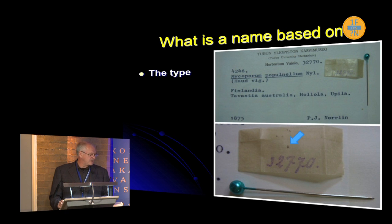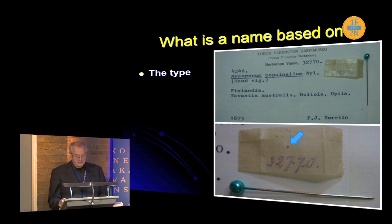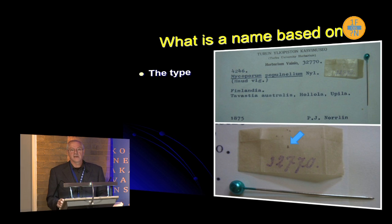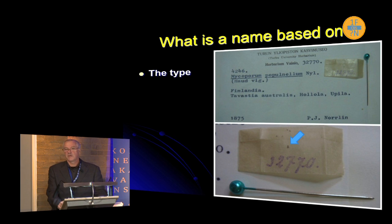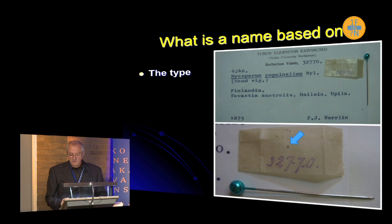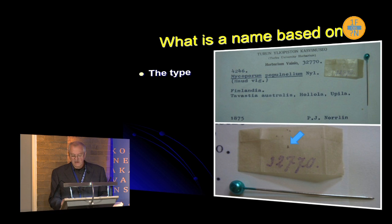Well, of course it's based on the type, and there are many types. Here is an example of a type — a tiny, tiny little piece of something. Types are not always in very good condition, but that is what the name of the fungus is based on — that little bit of dirt.